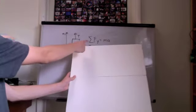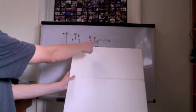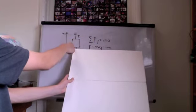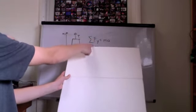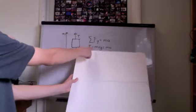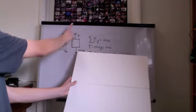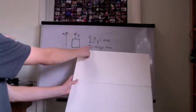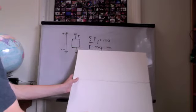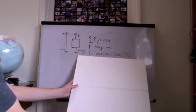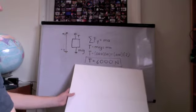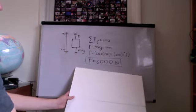We take our force diagram and apply Newton's second law: the sum of the forces in the y-direction is equal to mass times acceleration. The sum of our forces is T minus mg — T is positive, mg is negative — so T minus mg equals mass times acceleration. We solve for T by filling in all known values using algebra, and we get a tension of 6,000 newtons in the cord.